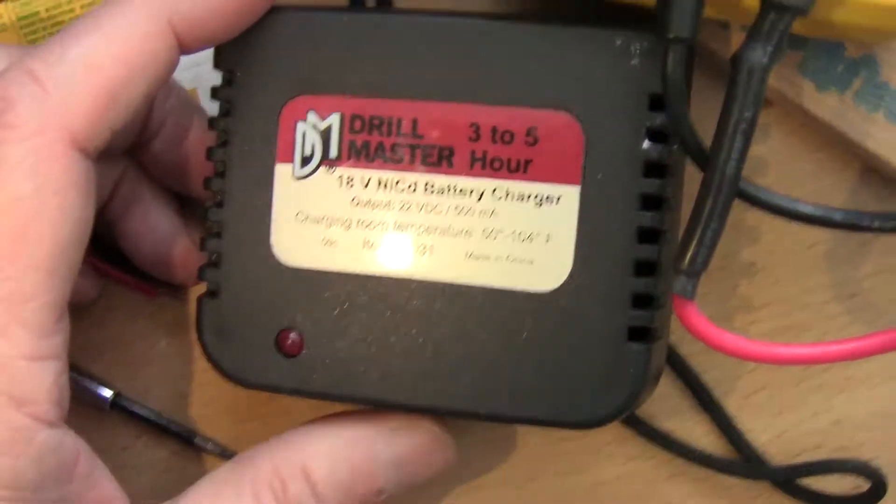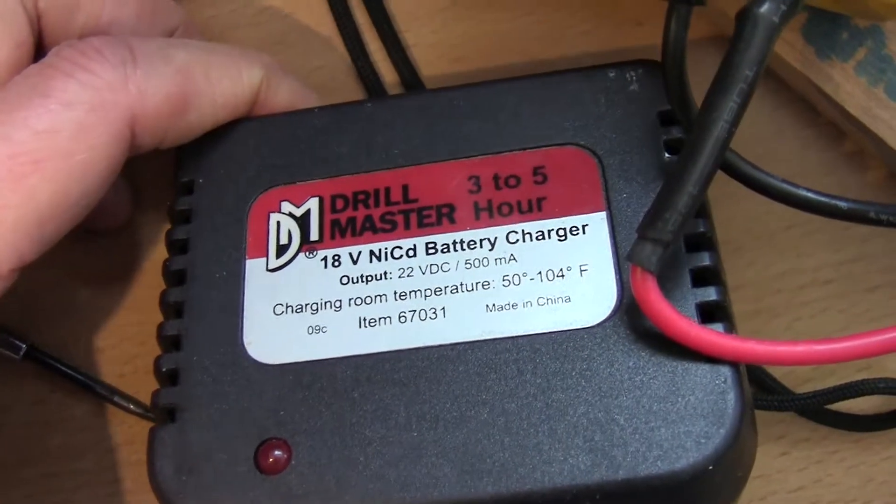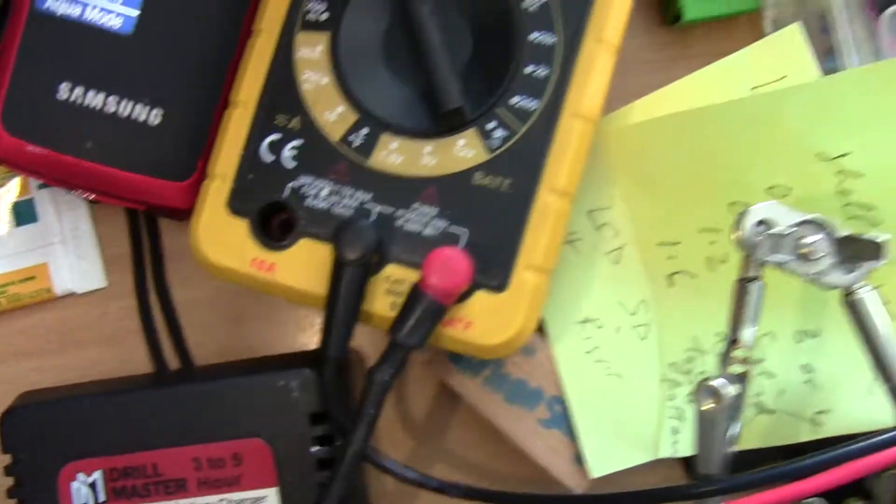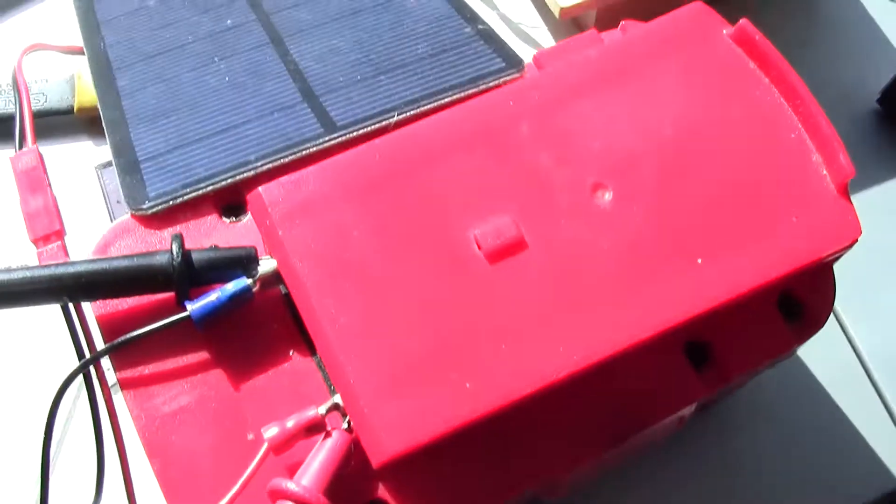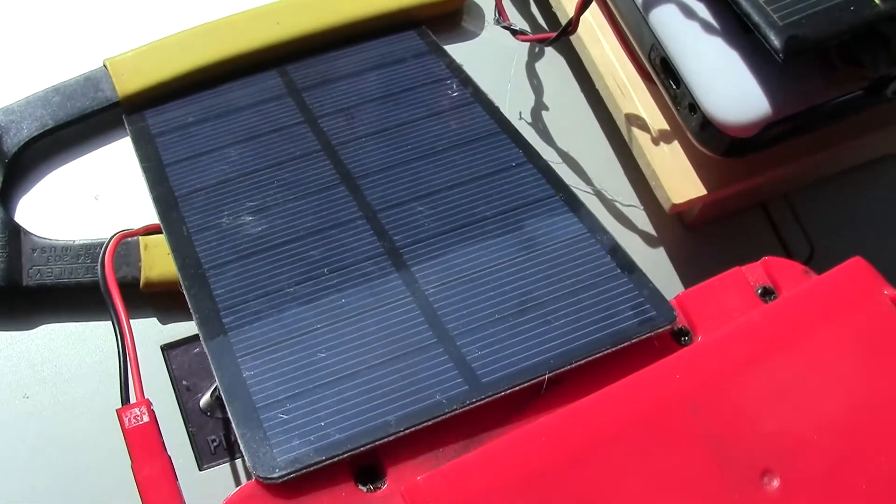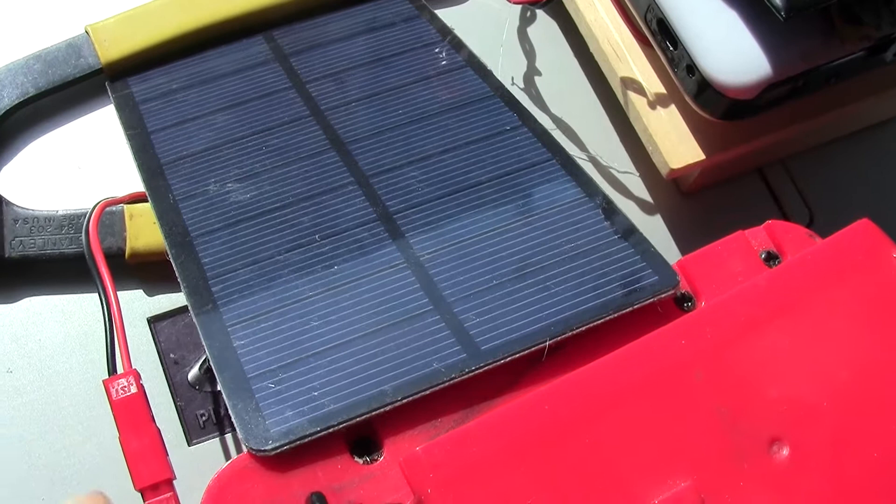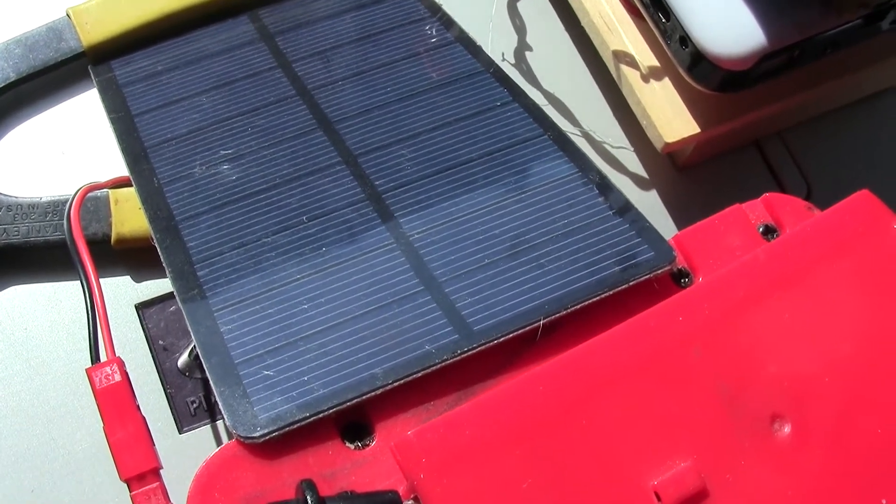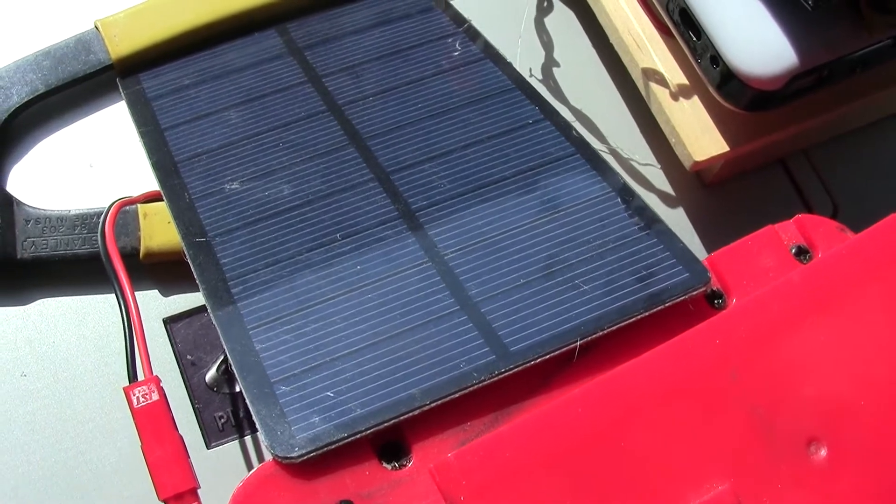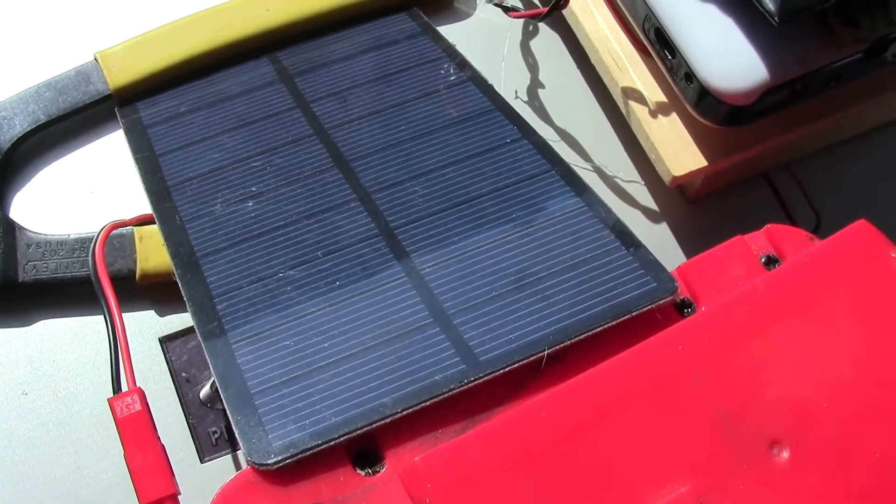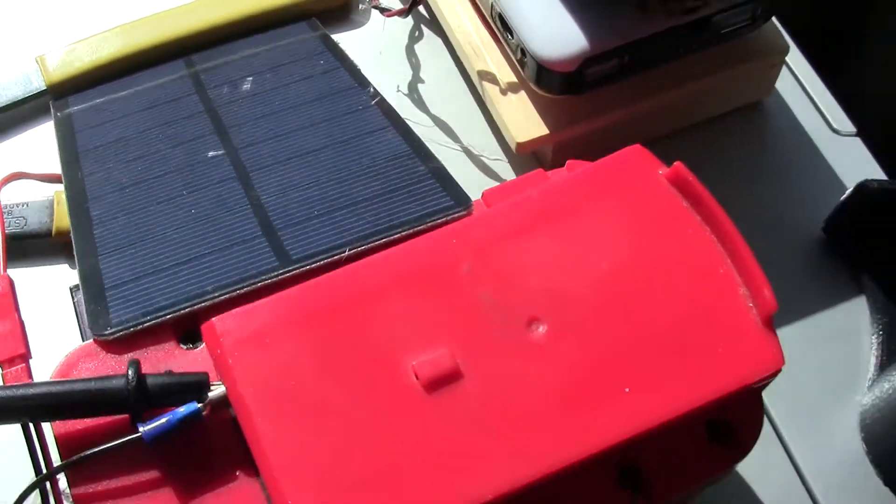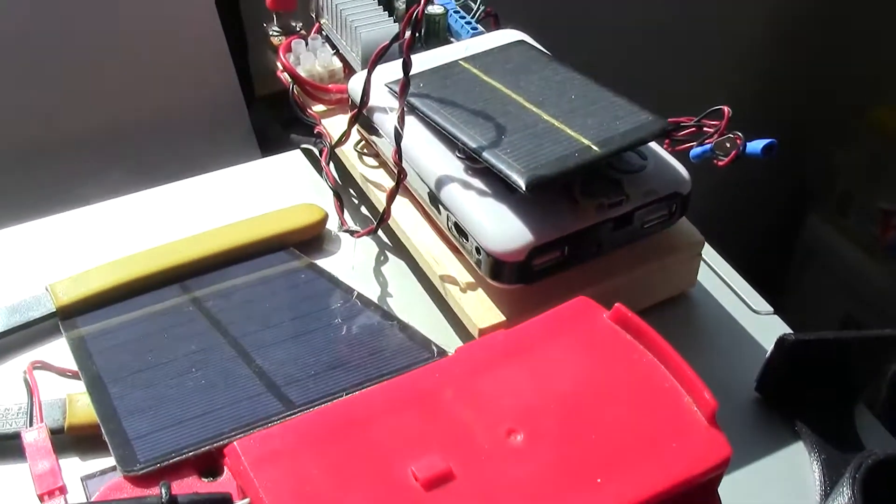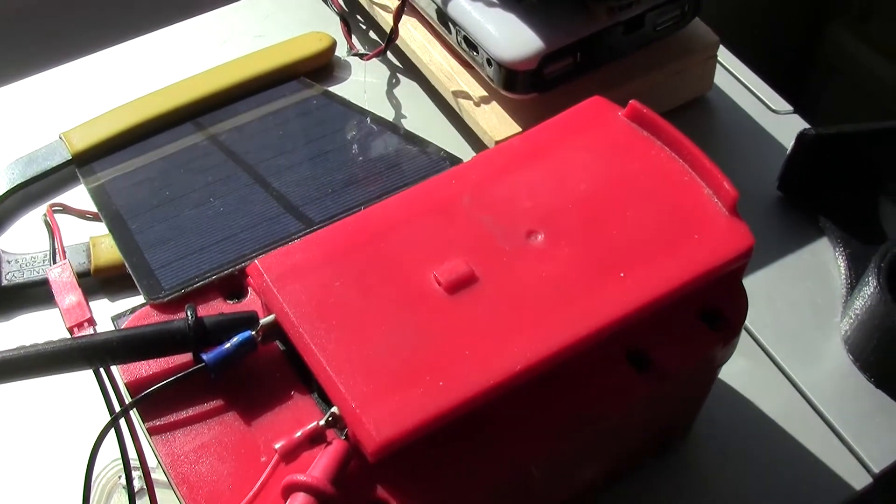The charger that comes with it is a 22 volt output, 500 mA, and you could also charge it with a solar panel like this. This is only 4.5 volt output, about one and a half watts, but you can make it work to charge the 18 volt, even though this is only 4.5 volt output.